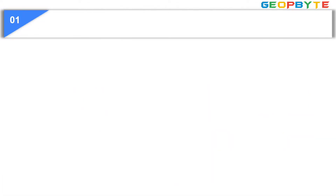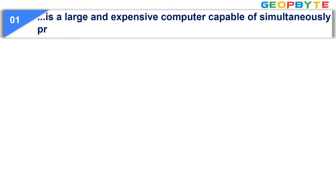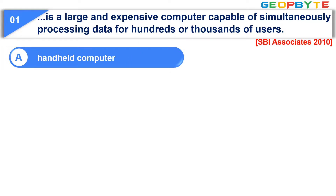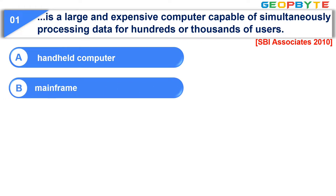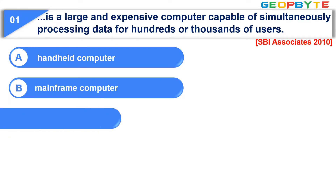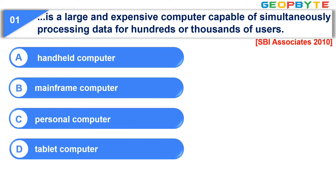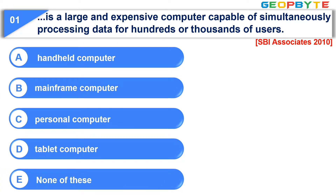Moving to question number one. Blank is a large and expensive computer capable of simultaneously processing data for hundreds or thousands of users. Option A: Handheld computer. Option B: Mainframe computer. Option C: Personal computer. Option D: Tablet computer. Option E: None of these. The correct answer is option B, Mainframe computer.